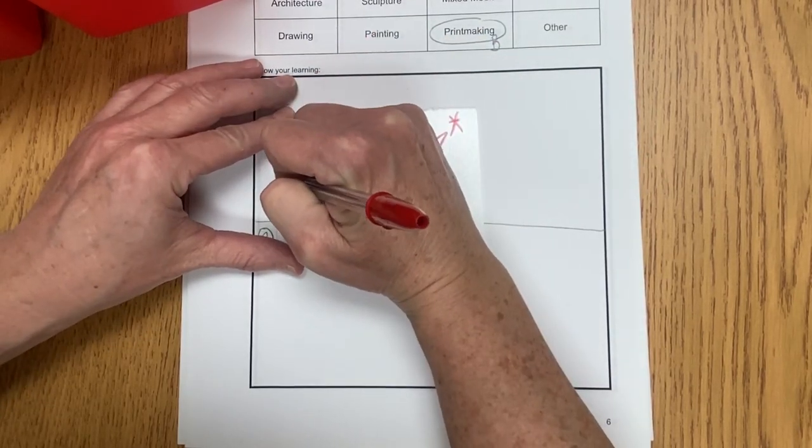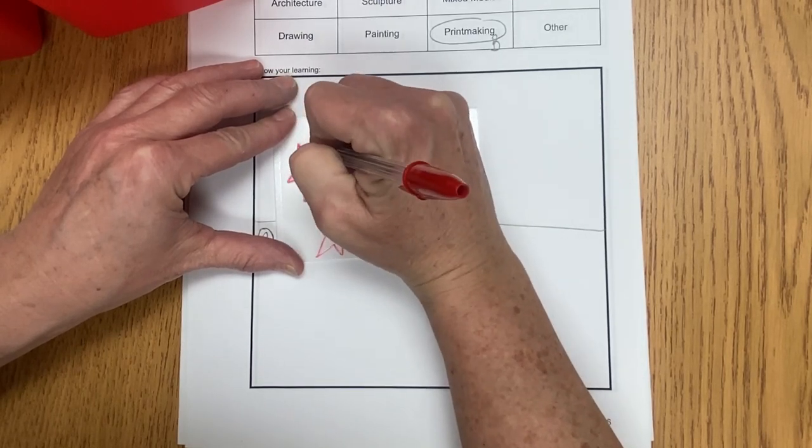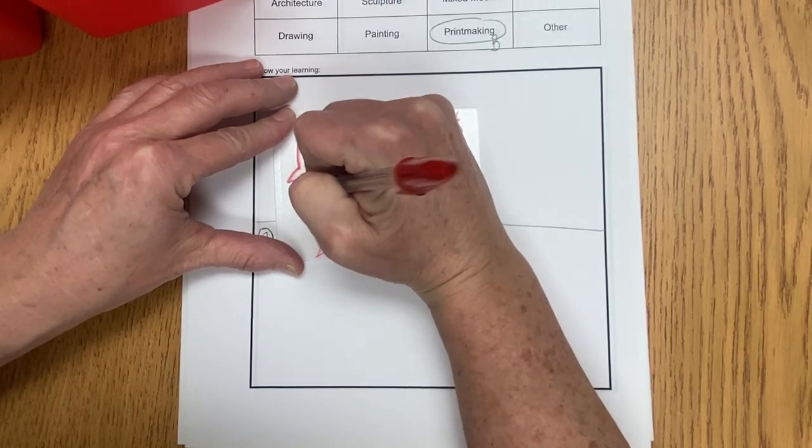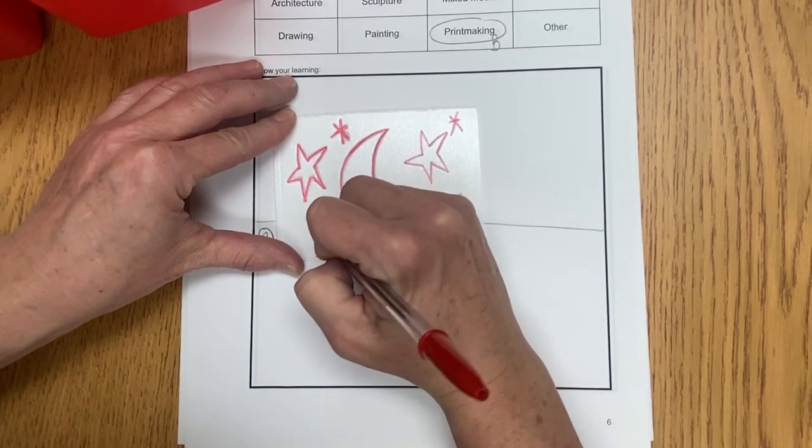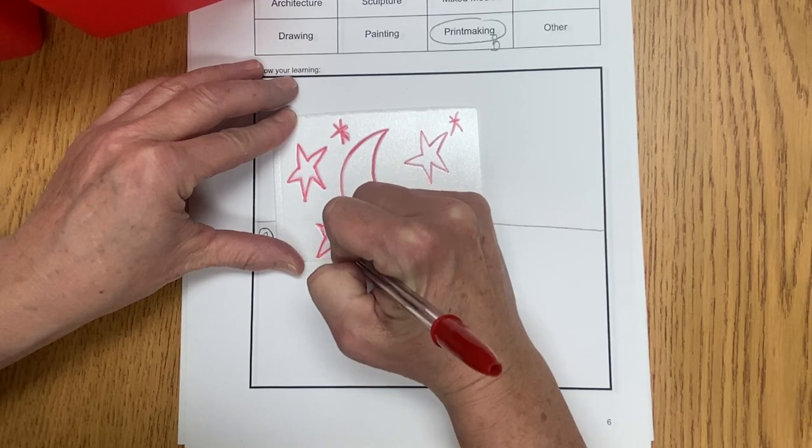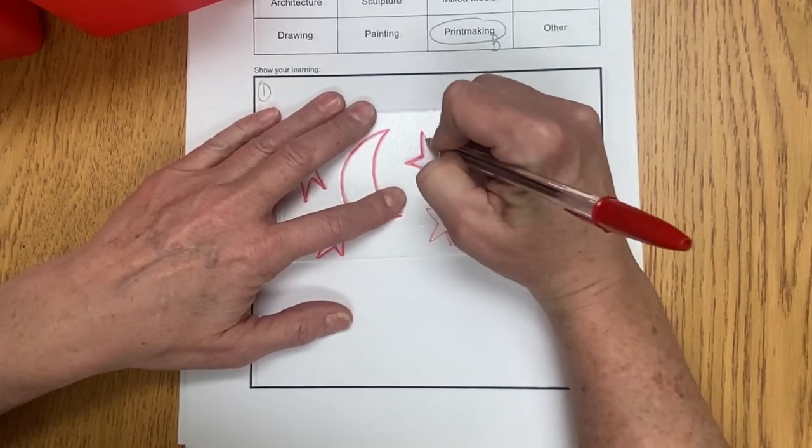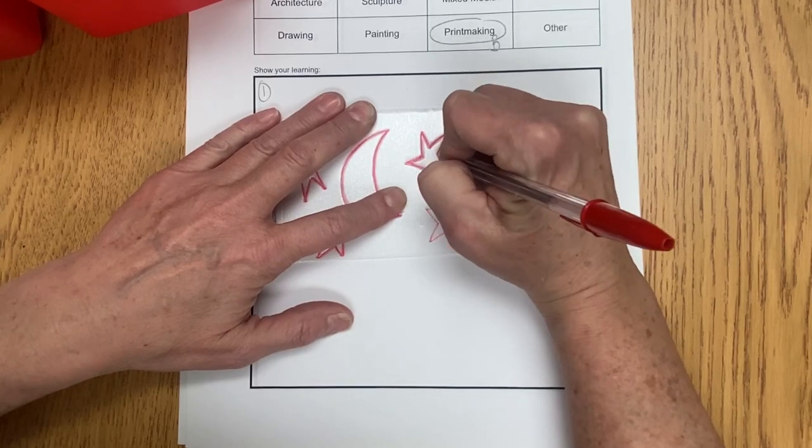Now everywhere that I'm smashing this foam down, it's creating a void. It's making a spot that's going to be white because there's going to be no markers on it at all. Once I get done tracing all of these, I'm going to put marker onto my actual stamp that I just made.